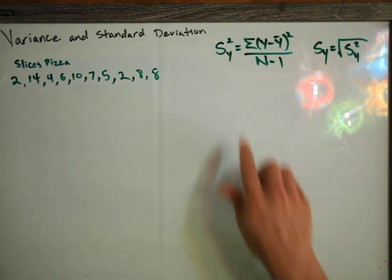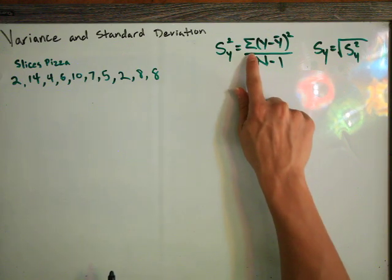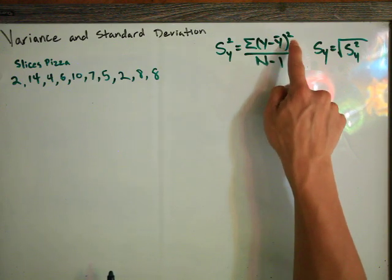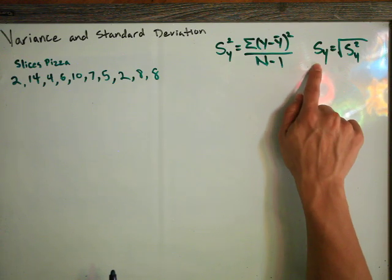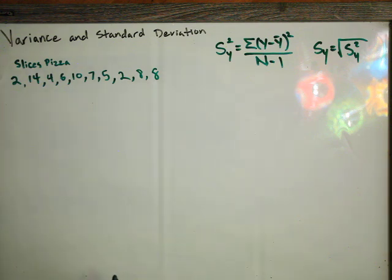We're going to use these two formulas. This is the variance, which is the sum of y minus y bar squared over n minus 1, and the standard deviation, which is the square root of the variance.